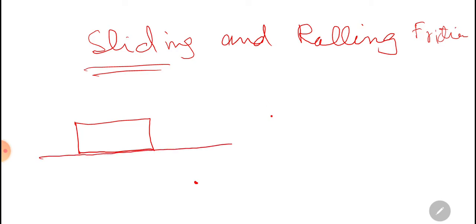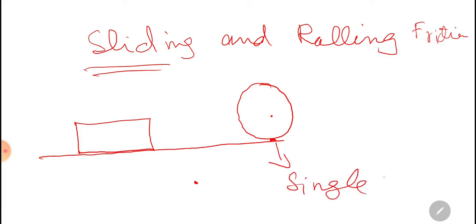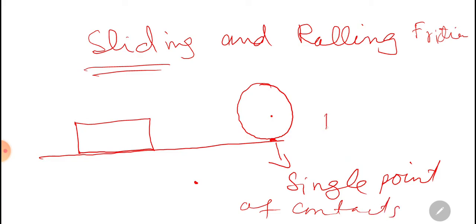In sliding friction, a body slides on the surface. In rolling friction, a body rolls on the ground surface and there is a single point of contact, so friction will be less.